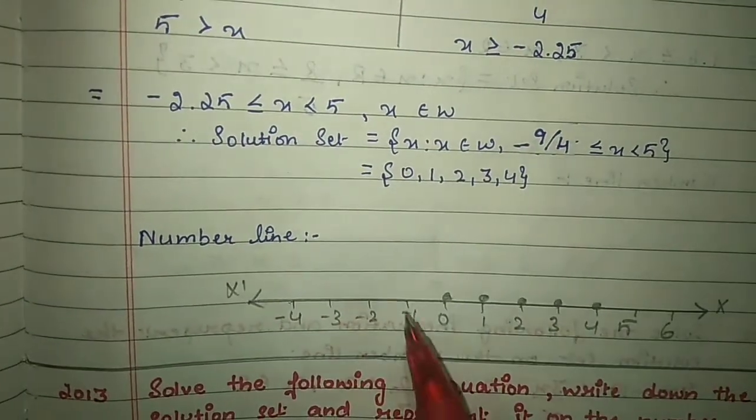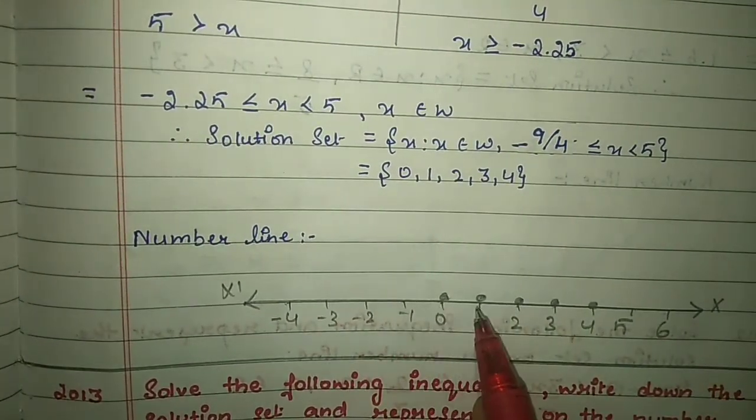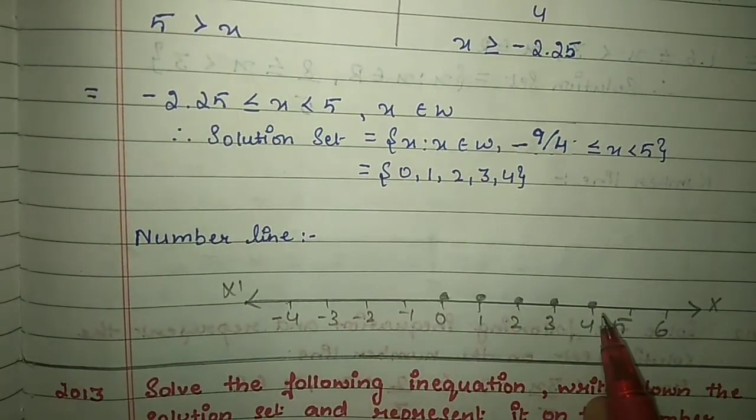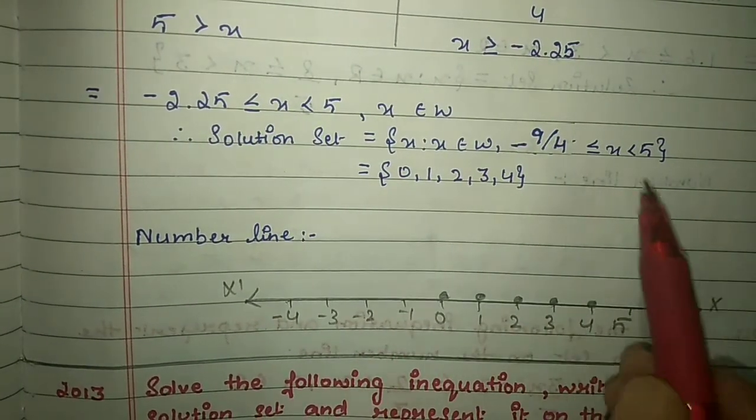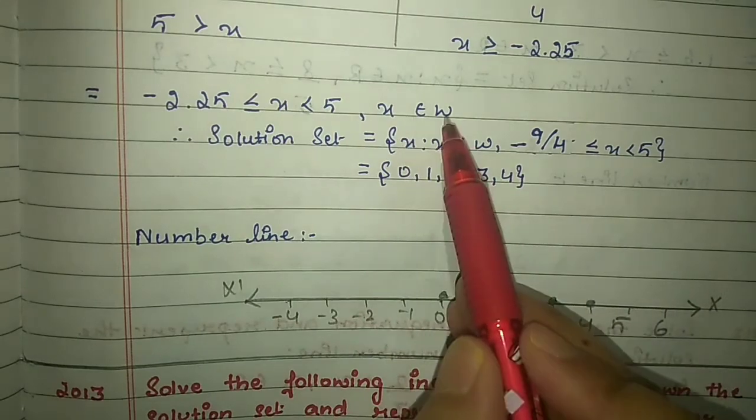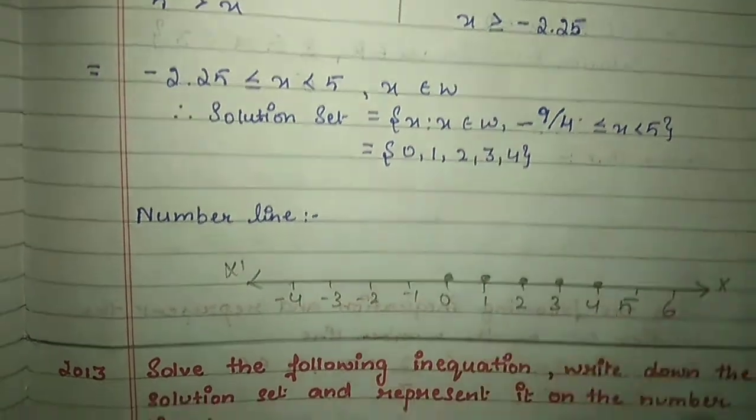On the number line, mark only these whole number points: 0, 1, 2, 3, 4, since x belongs to whole numbers.